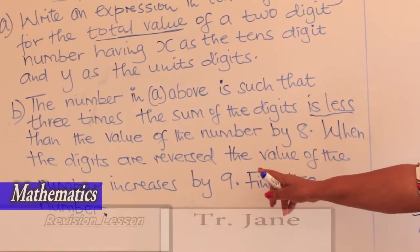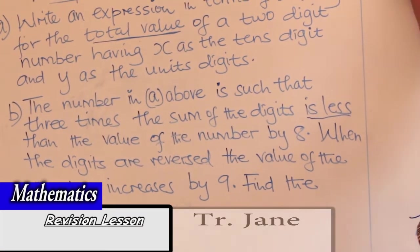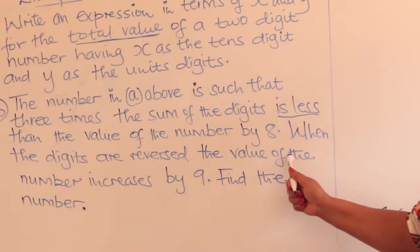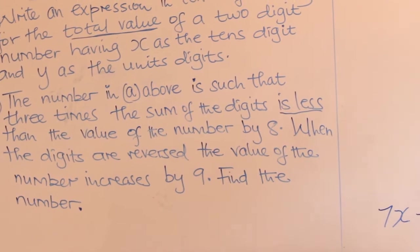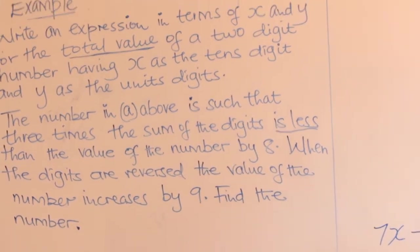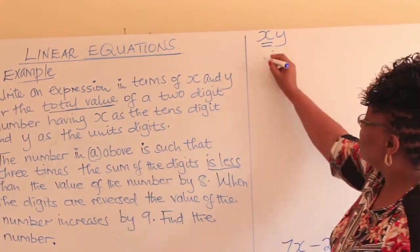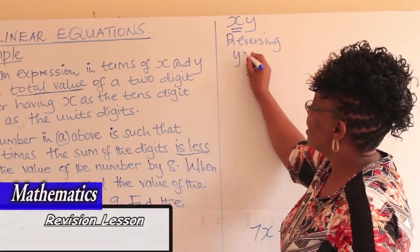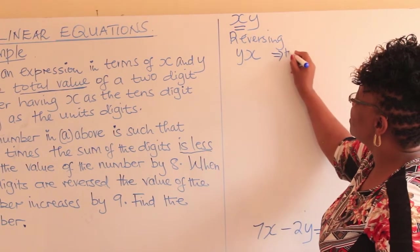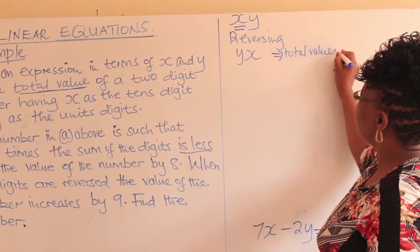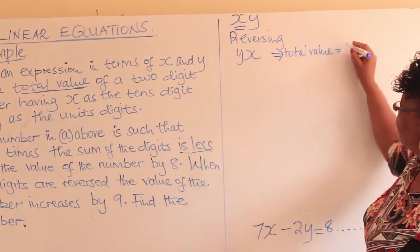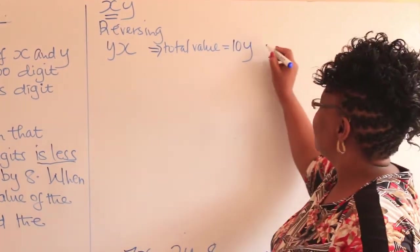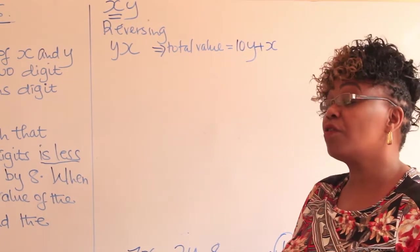We continue. When the digits are reversed, remember our original number was xy. If we reverse it, we read it as yx. The total value of the reversed number yx would be y times ten plus x times one, which gives 10y + x. The original value was 10x + y.